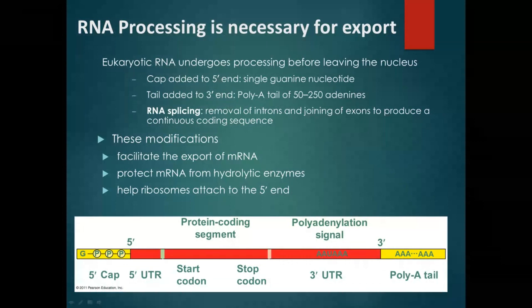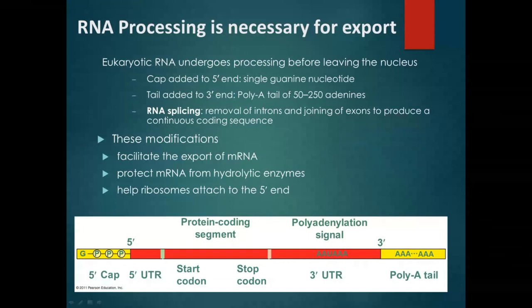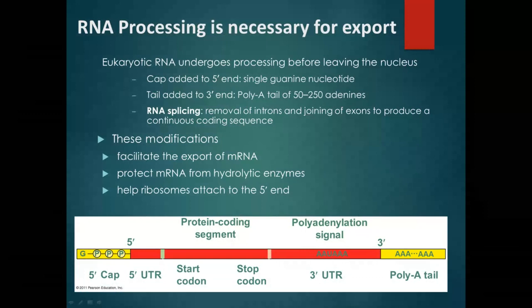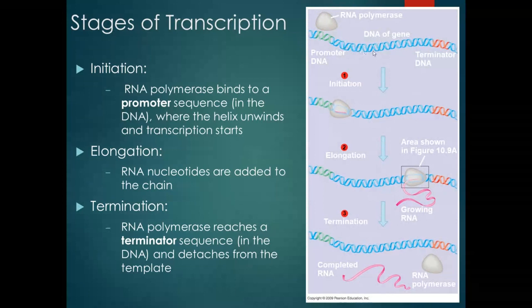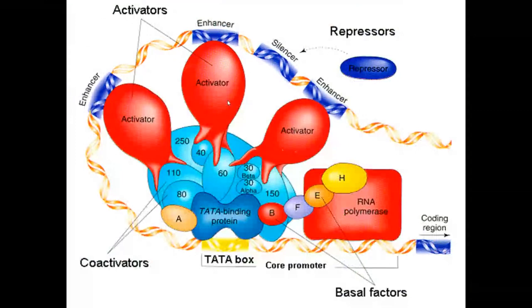We talked about the parts of the gene. The promoter is the on-ramp where the polymerase binds, along with all the transcription factors. Then we have the coding region, which has the instructions that are going to be made into a protein or an RNA. And then we have the termination sequence, which is basically the off-ramp. The parts of the gene correlate to the stages of transcription: initiation happens at the promoter, elongation during the coding region, and termination at the terminator sequence.